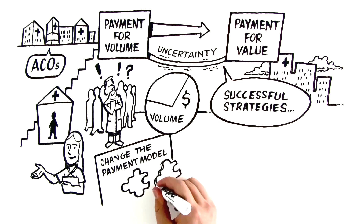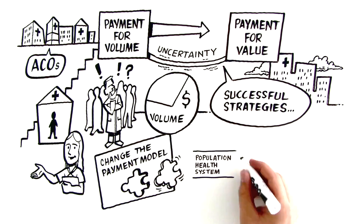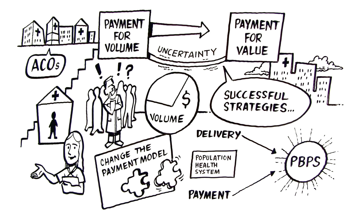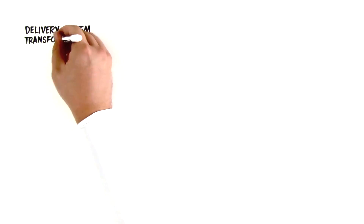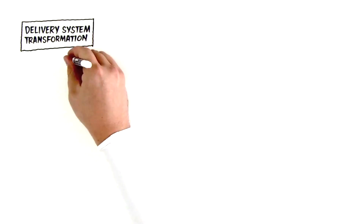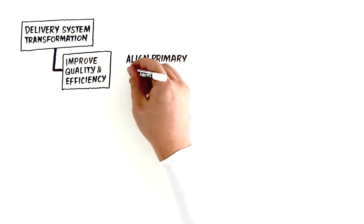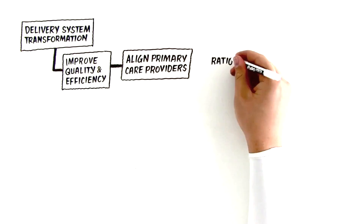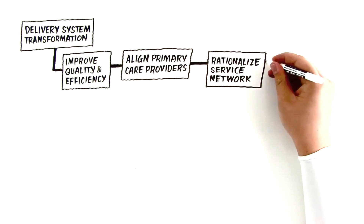Successful strategies for providers crossing the shaky bridge need to coincide with changes in the payment model, creating a true population health system that brings the delivery and payment systems into alignment. Delivery system transformation focuses on quality and efficiency, alignment between hospitals and primary care providers, and rationalization of the service network.